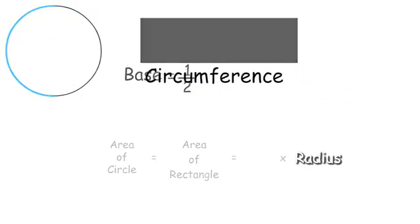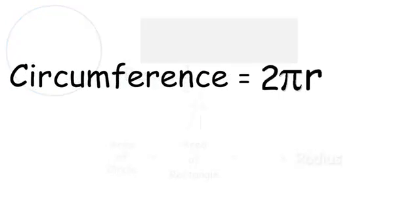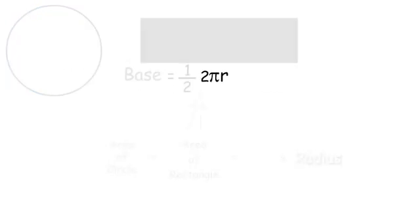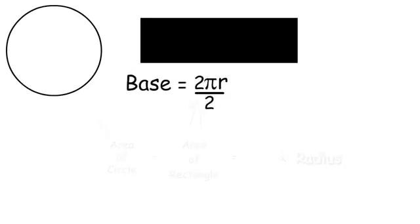Remember that the circumference is equal to 2 pi r. When we combine it with one half, the 2's cancel out, and base is equal to pi r.